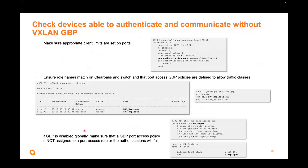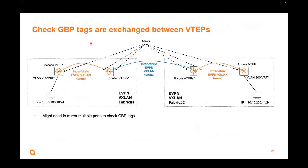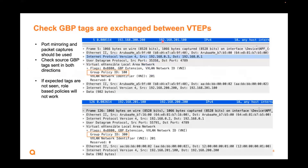If GBP is disabled globally, make sure the GBP port access policy is not assigned to a role — if it's assigned and you disable GBP globally, authentication will fail. Check that single-fabric VXLAN GBP works with roles assigned and working within the fabric, using 10.8 resources. Finally, check that GBP tags are exchanged between VTAPs. You may need to mirror multiple ports — verify the access VTAP is sending the GBPID, and that the border is receiving and relaying it to the other fabric. Confirm the correct GBPID is seen for each role.